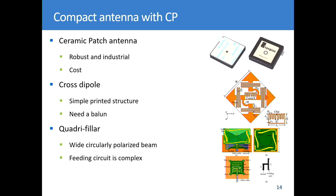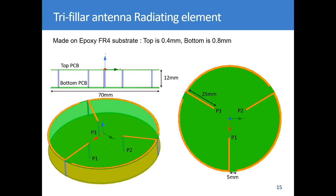This is the solution we found. We have three miniature antennas — classical inverted-F antennas — arranged in a trifiler configuration. The size is seven centimetres with 12 millimetres of thickness. To generate CP from these, you need a circuit to create a power split and phase shifts of 0°, 120°, and 240°.